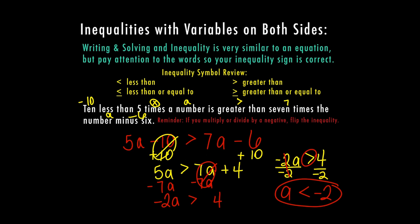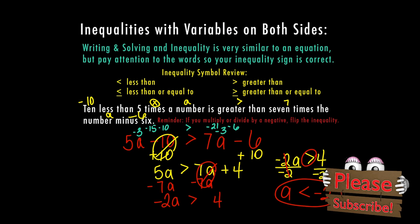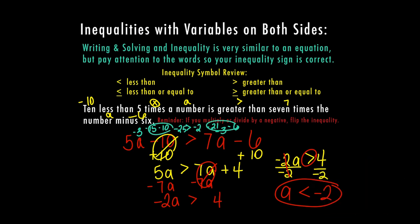Since A is less than negative 2, I'm going to pick a number less than negative 2 to test out and make sure this works. I'm going to plug negative 3 into my original equation, because I know that is less than negative 2. Five times negative 3 is negative 15, and then I have a negative 10, giving negative 25 on the left. On the right, I have 7 times negative 3 minus 6: that's negative 21 minus 6, which is negative 27. And I know negative 25 is greater than negative 27, so this checks out.